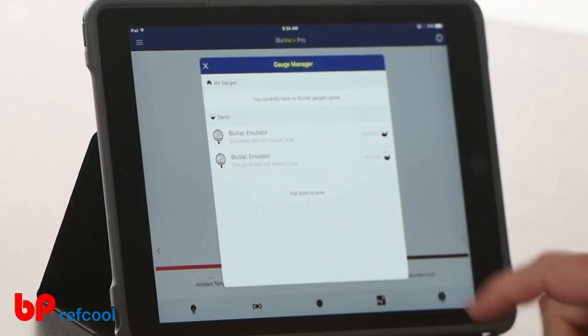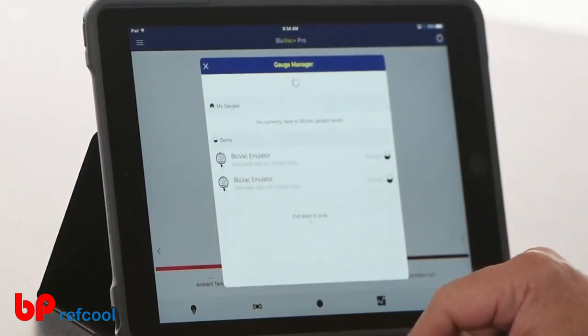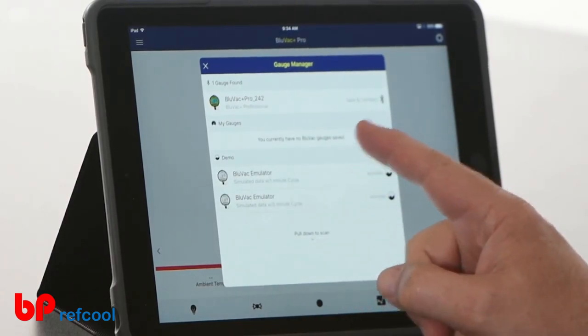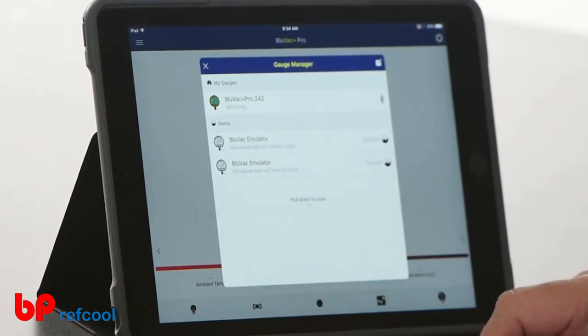The first step we're going to do here is actually attach a gauge. I'm going to tap the gauge manager at the bottom. I'm going to pull down the scan. Because we've got that Bluetooth on, it's going to see what gauges are available. You can see we got the Bluvac Pro 242 here. We're just going to hit save and connect.